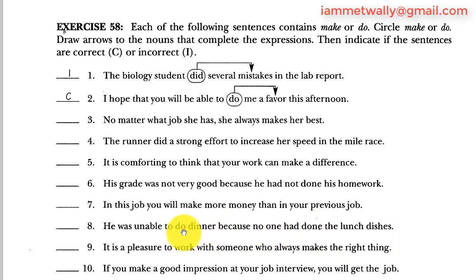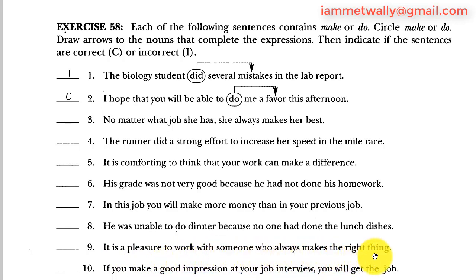Sentence eight: he wasn't able to do dinner because no one had done the lunch dishes. You don't 'do dinner' — you 'make dinner,' because before you make dinner there was no dinner; you create it from scratch. So sentence eight is incorrect. Sentence nine: it's a pleasure to work with someone who always makes the right thing. You don't 'make the right thing' — you 'do the right thing,' because the right thing is already there; you just perform it, you just follow it. You haven't created it. So sentence nine is incorrect.